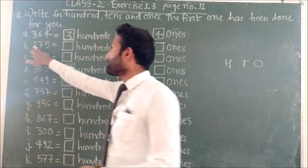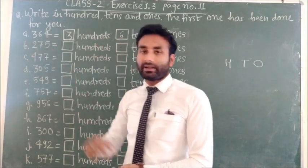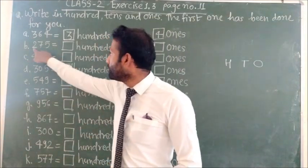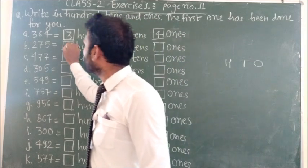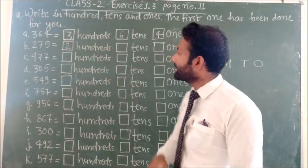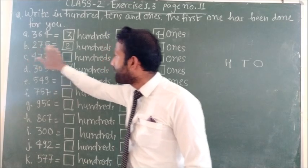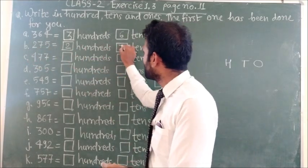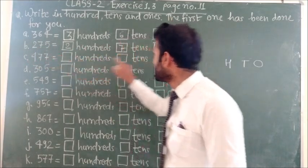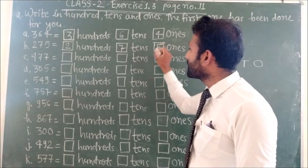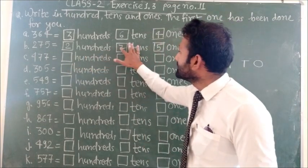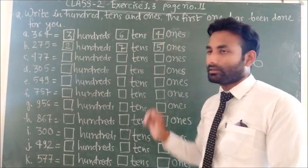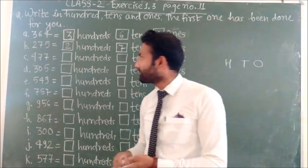Next question is 275. The first box we fill with 2 for hundreds. Next number is 7 for tens, and last number is 5 for ones. So 2 hundreds, 7 tens, and 5 ones.